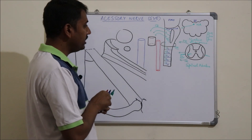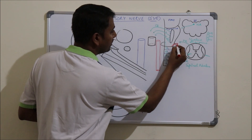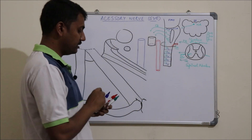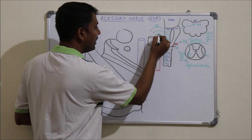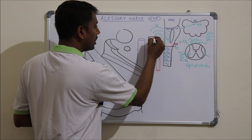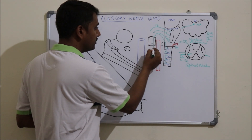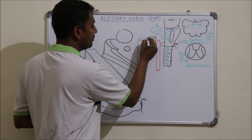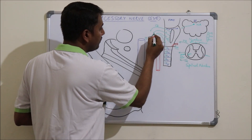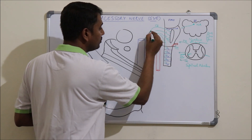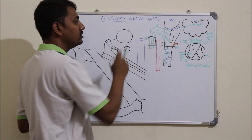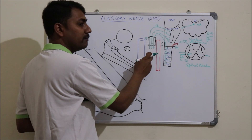At the level of the foramen magnum, the spinal part lies posterior to the fourth part of the vertebral artery. Then the spinal part joins with the cranial part of the accessory nerve, and together they pass through the jugular foramen. In the jugular foramen they lie in the intermediate compartment, along with the 9th and 10th cranial nerves. These three nerves pass through the intermediate compartment to exit the posterior cranial fossa into the base of the skull.